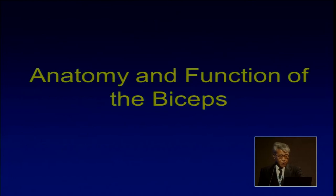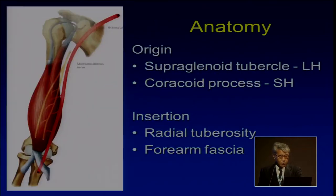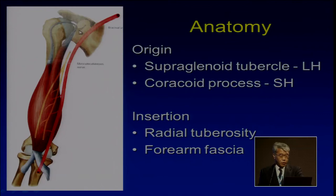First, anatomy and function of the biceps. As you know, the long head of the biceps crosses across the shoulder joint and also the elbow joint. So this muscle has function to both joints: shoulder and elbow.